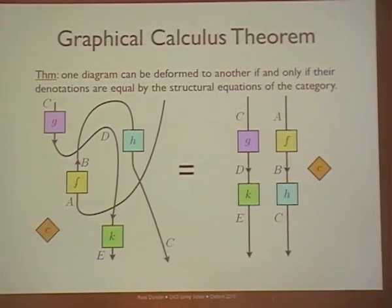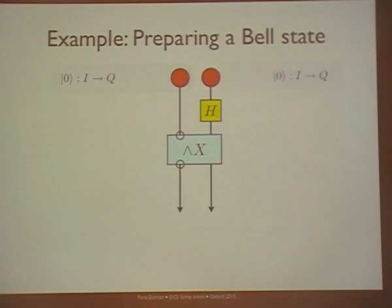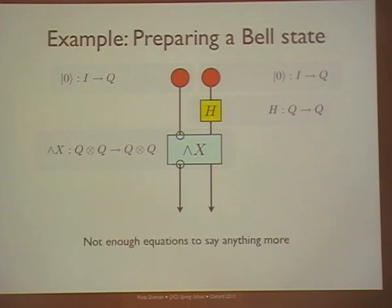What can you do with such a thing? A nice example of working in a dagger compact category is to write a quantum circuit. I can write down a circuit and label the inputs — zeros, a Hadamard — but I'm going to stop there, because I don't have any more structure and don't have any more equations to prove properties about it. So this is why I'm going to introduce a bit more algebra.